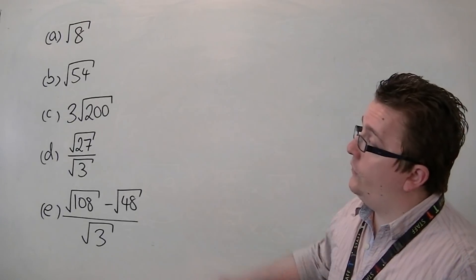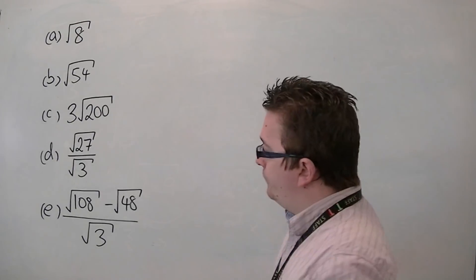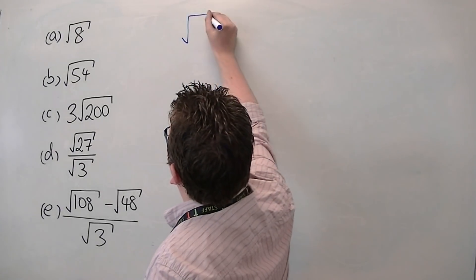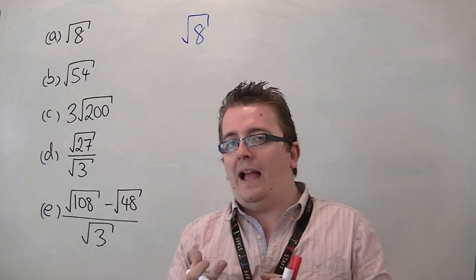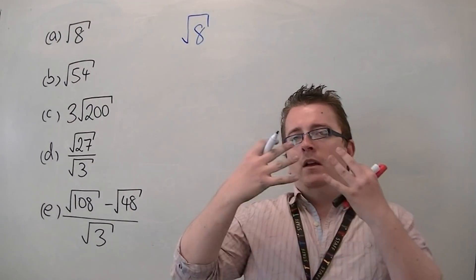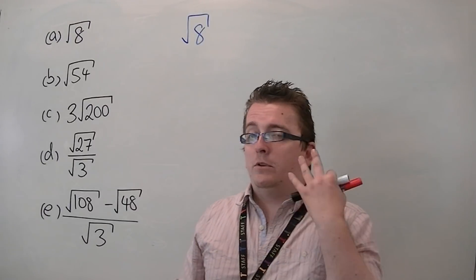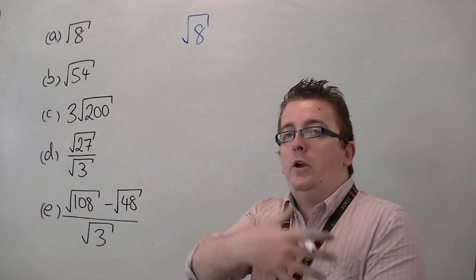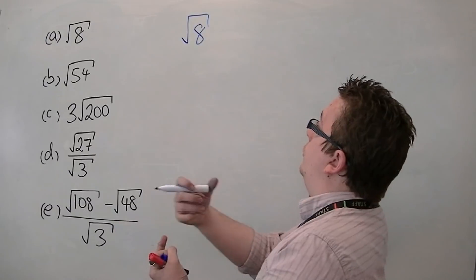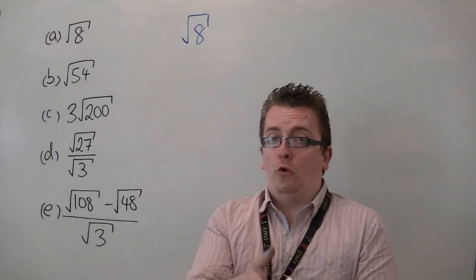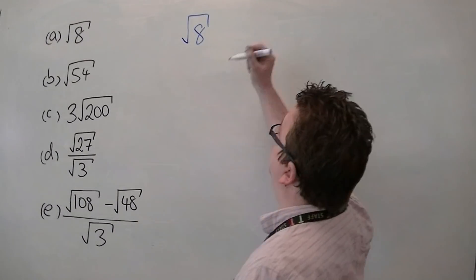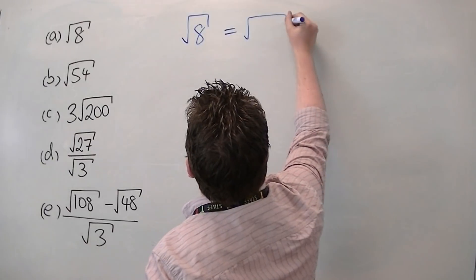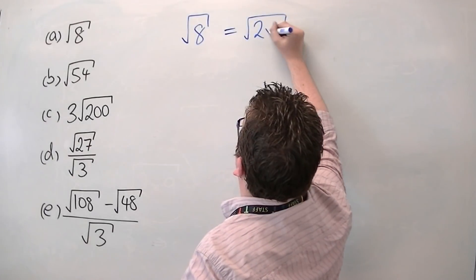So we're going to start off with this first one, root 8. As I introduced in the last video, you're looking at trying to find the square number that goes into 8, being able to write 8 as something times the square number. So the square number that we're looking for is 4. 2 lots of 4 is 8, so you can write that as the square root of 2 times 4.